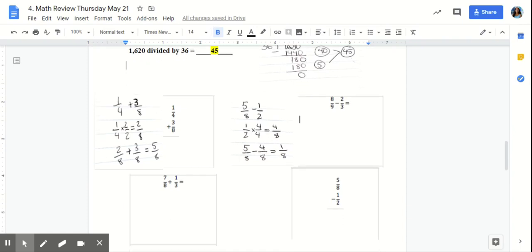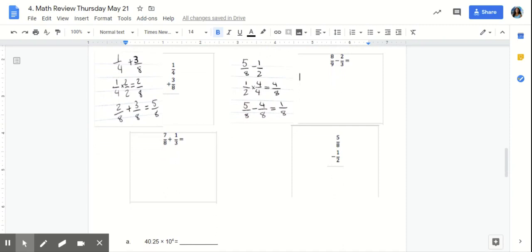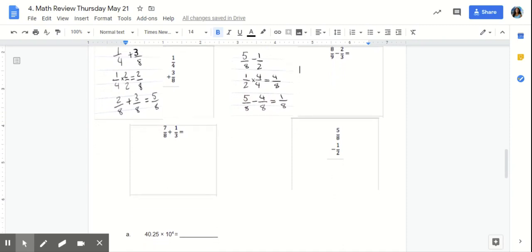Again, just a reminder to make sure that you're checking your work. Go ahead and use a similar strategy to solve the next two problems. Your answer for 7/8 plus 1/3 equals 5/24, and 5/8 minus 1/2 equals 2/9.